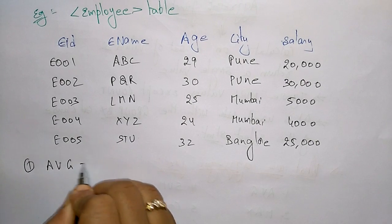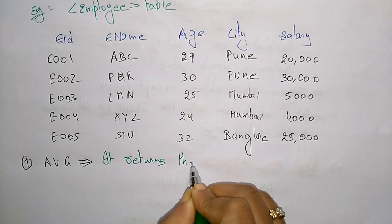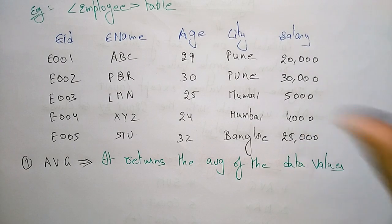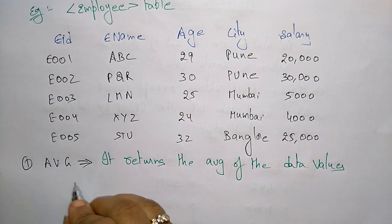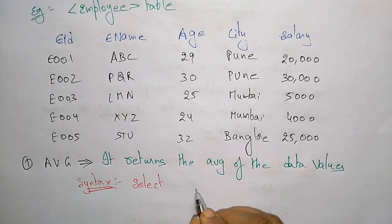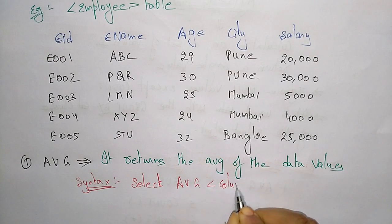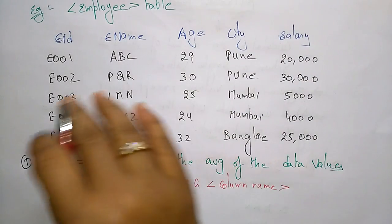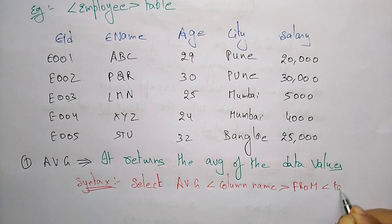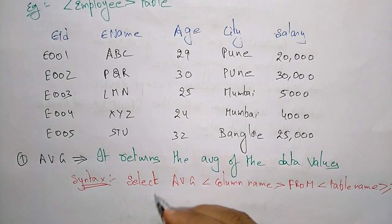The first aggregate function is AVG. This function returns the average of the data values — it takes all the values in a column and finds the average. The syntax is: SELECT AVG(column_name) FROM table_name.